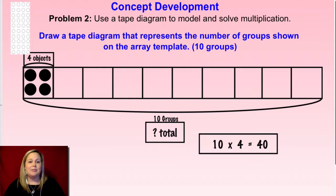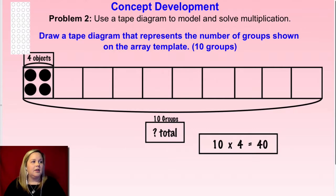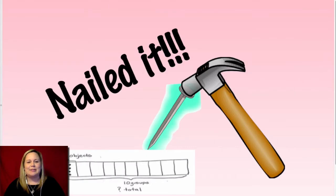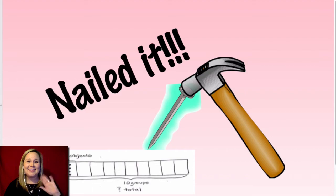If you'd like to practice again, you can make a tape diagram that represents 7 times 4, or even 4 times 5 — you can really pick any two numbers to practice. Check out your learning guide if you need another practice. Otherwise, you guys nailed it with tape diagrams and arrays today! Please head back to the module to see what you need to complete for your independent practice. If you have any questions, don't hesitate to reach out — I look forward to seeing you all soon. Have a good day, friends!